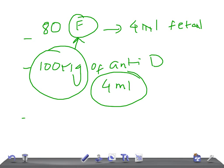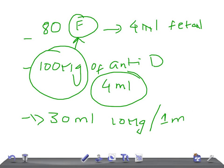If the volume of fetal-maternal hemorrhage is more than 30 mL, the dose of Rh immunoglobulin is calculated as 10 micrograms for every 1 mL of fetal whole blood. That's the basic interpretation of the Kleihauer-Betke test.